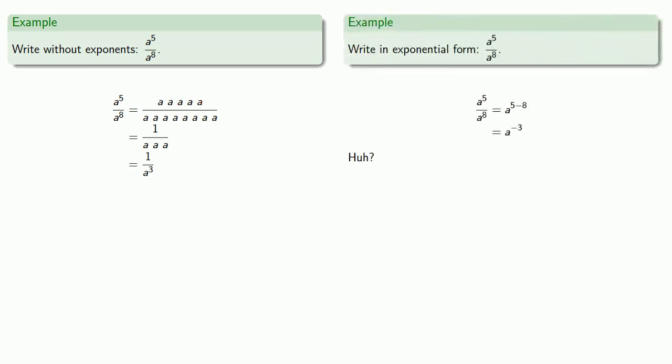Now, if we go back to the problem that we started with, we found that on the one hand, a to power five over a to power eight looks like it should be a to power negative three. On the other hand, when we did this without exponents, we found that it actually was equal to one over a to the third. Now, there's no reason why a to power negative three has to mean anything. But the work that we did here suggests that we could interpret a to power minus n as one over a to power n.